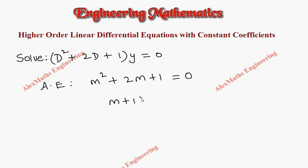After factorizing this, we get m plus 1 whole square equal to 0. By equating each factor to 0, we get two values for m. One is minus 1, other is also minus 1.